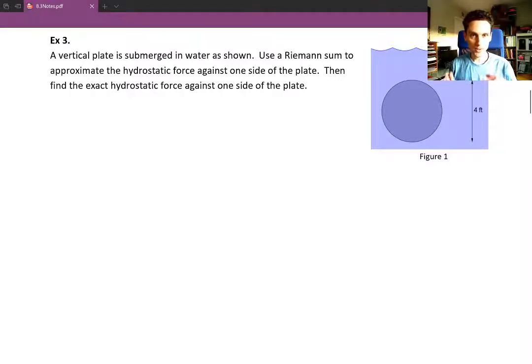So here we're going to go through that process of breaking up into thin horizontal strips, figuring out the force that's acting on each strip, and then adding them all up to get the Riemann sum that approximates the hydrostatic force on one side of the plate. Then we take the limit as n approaches infinity which turns it into an integral and we can finish off that integral.